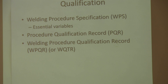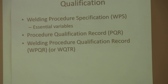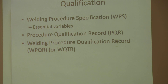The procedure qualification record is a record of the tests that were done to validate that procedure. Every weld procedure that the welders use has to have been qualified by doing a series of welds and then testing those welds according to what the code says in Section 4. It tells you how many bend tests you have to do and how many impact tests you have to do, depending on the material and the process. All of that information is recorded in the PQR.